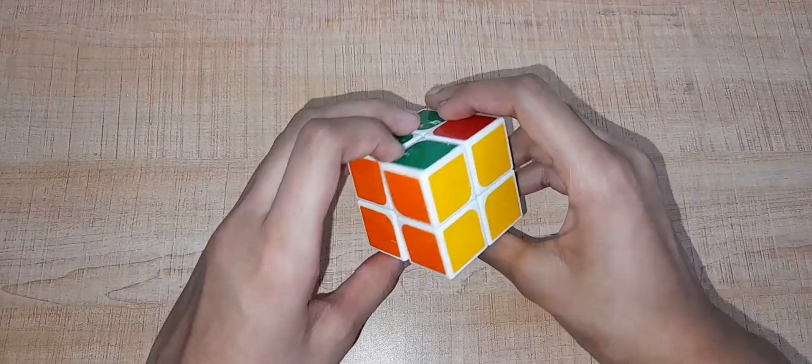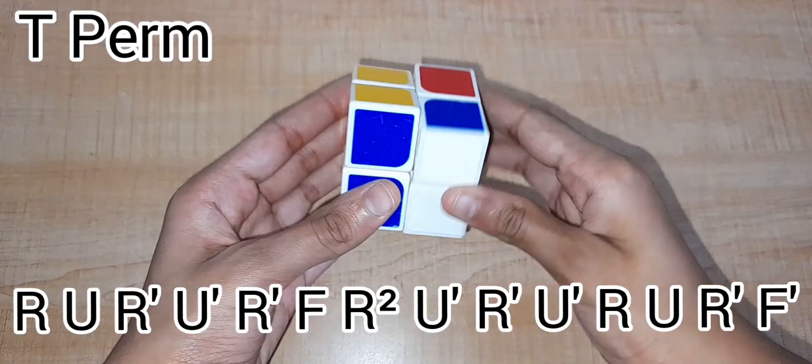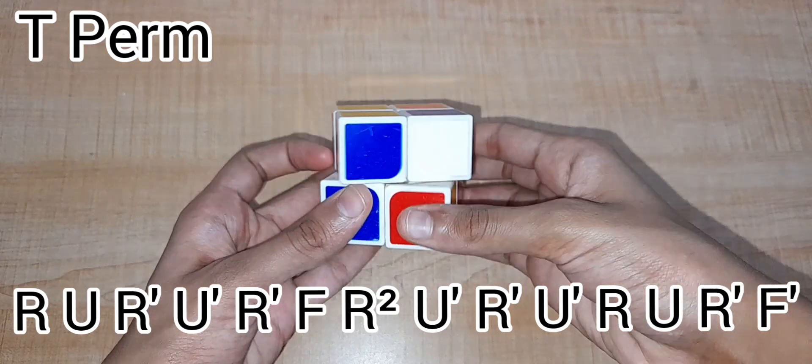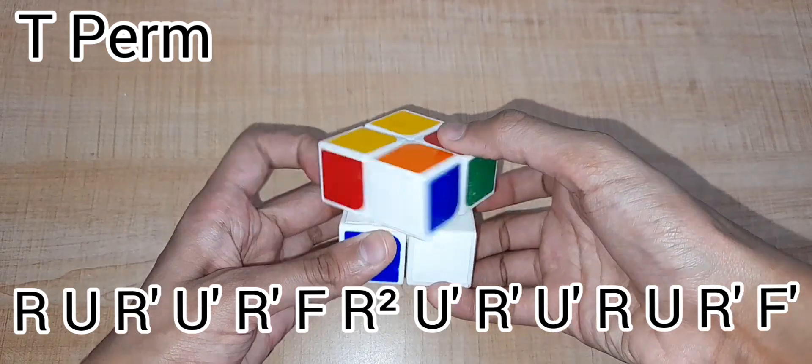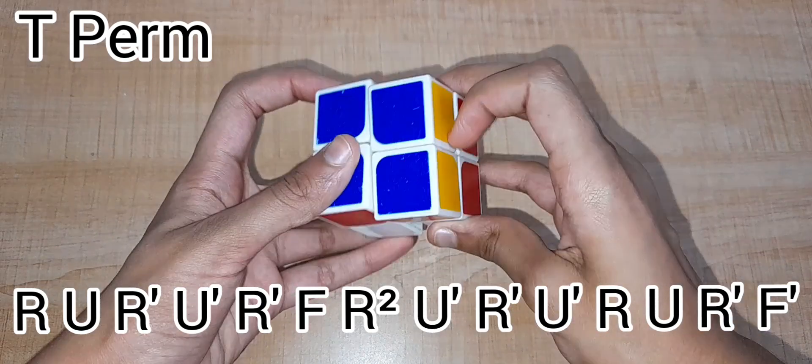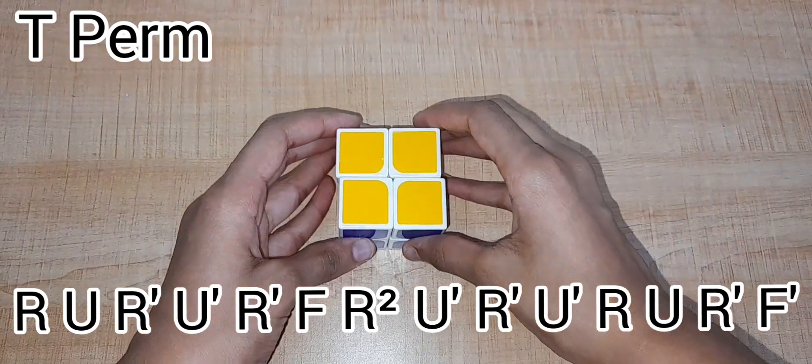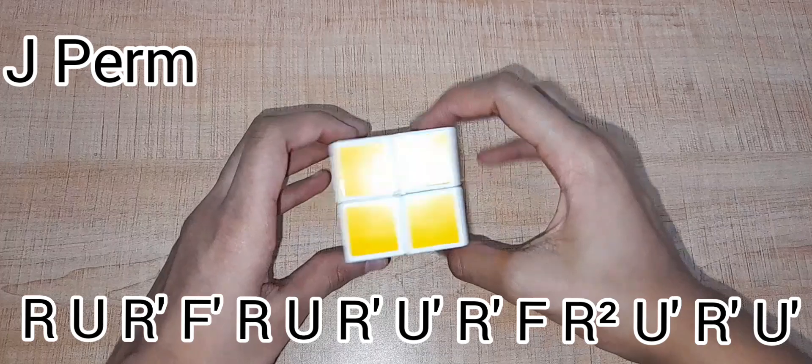When you get one side solved, you could do the T-perm or the J-perm.